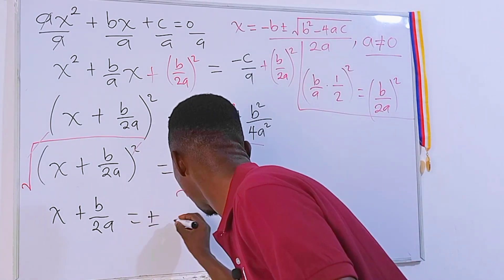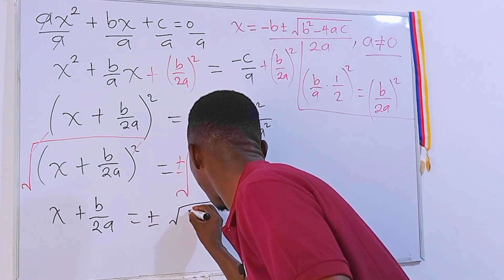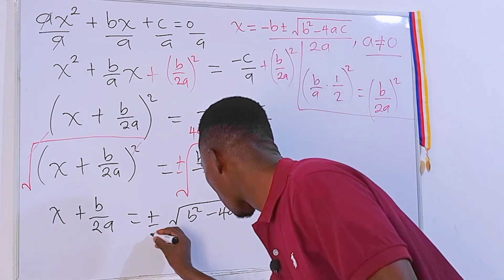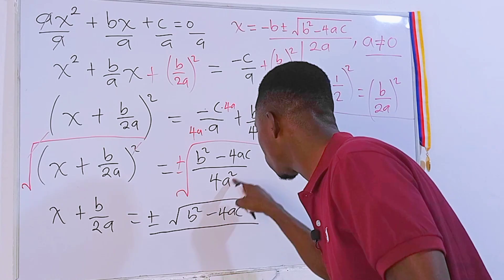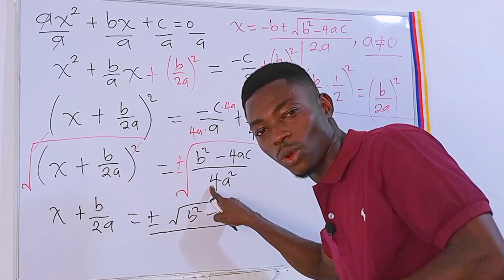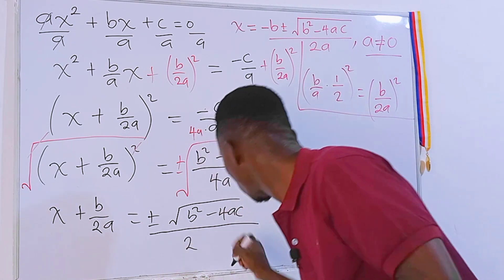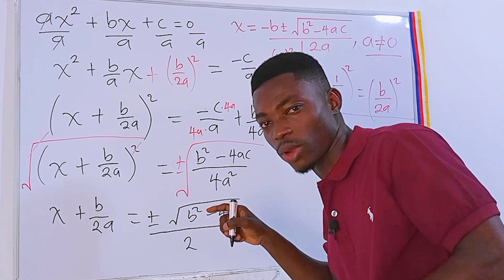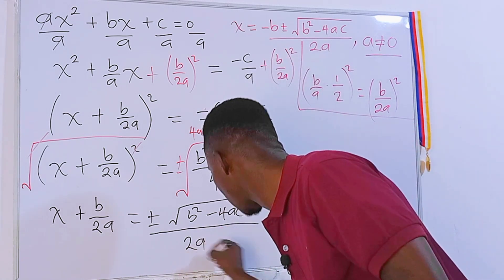I'll just put my plus or minus, then square root of b squared minus 4ac, all divided by 4a squared. Then square root of this right here. Square root of 4 will be 2. Then square root of a squared. The square will cancel out the square root and we'll be left with just a.